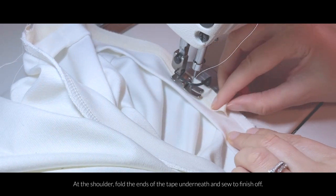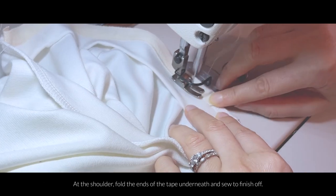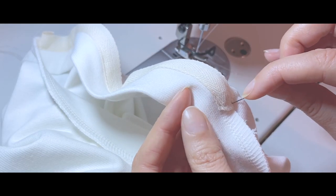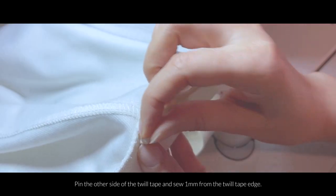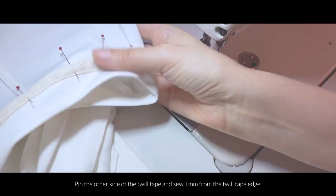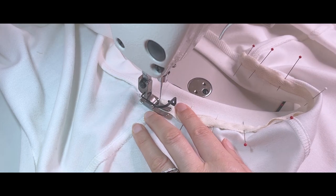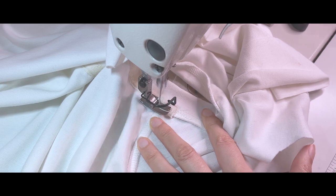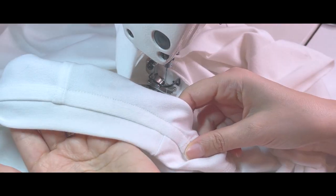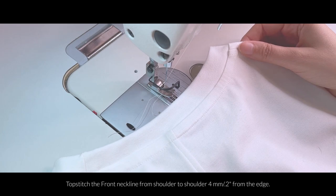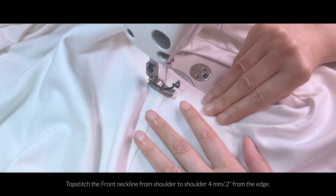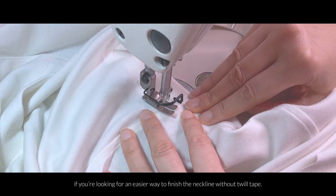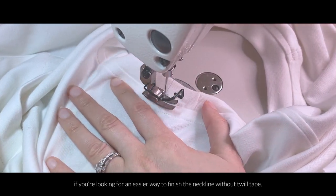And at the shoulder, fold the ends of the tape underneath and sew to finish off. Pin the other side of the twill tape and sew a millimeter from the twill tape edge. This way we're going to cover our serge seam. Topstitch the front neckline from shoulder to shoulder 4 millimeters or about 0.2 inches from the edge. And actually, you can just topstitch the neckline all around if you're looking for an easier way to finish the neckline without twill tape.